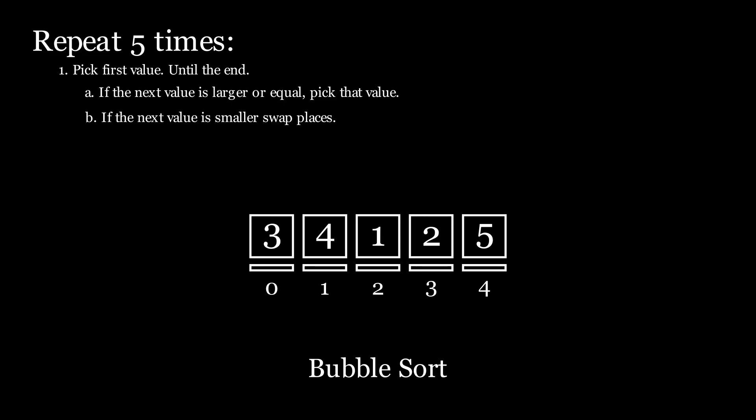To complete the bubble sort algorithm, we have to repeat our set of rules 4 more times. Since we have already completed one of the 5 repetitions, let's walk through one more round together and then speed up the animation to see the algorithm at work.